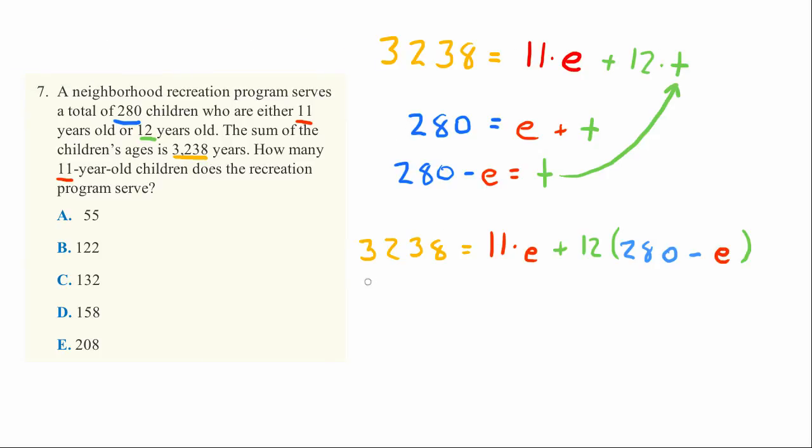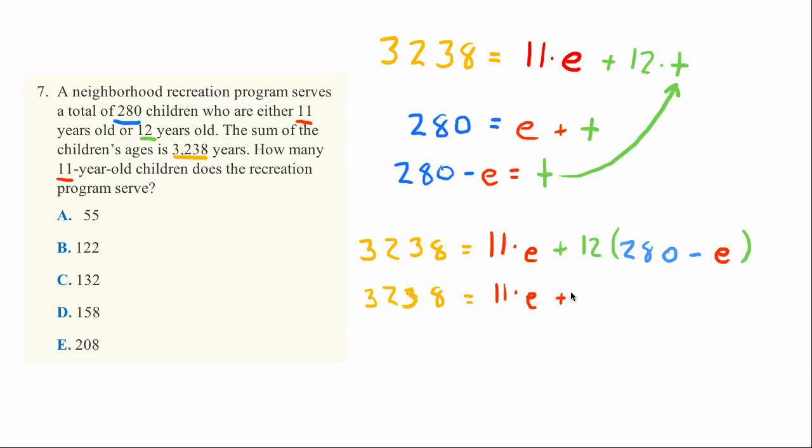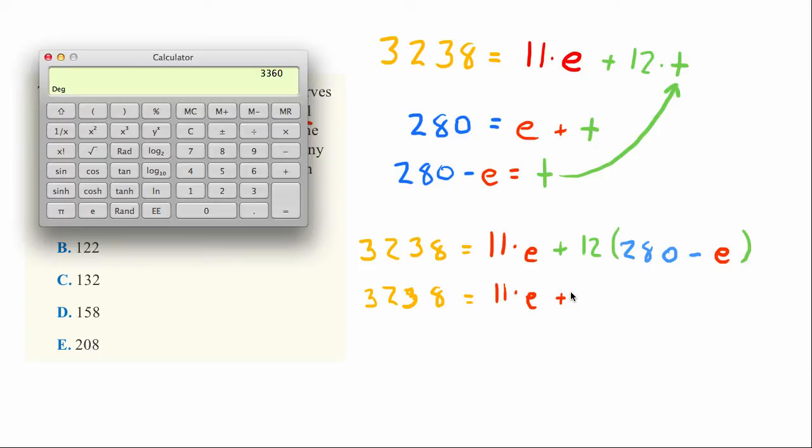The 3,238 stays as 3,238 equals 11E, and we'll expand the 12 times (280 minus E). 12 times 280 is a big number, so I'll use a calculator.